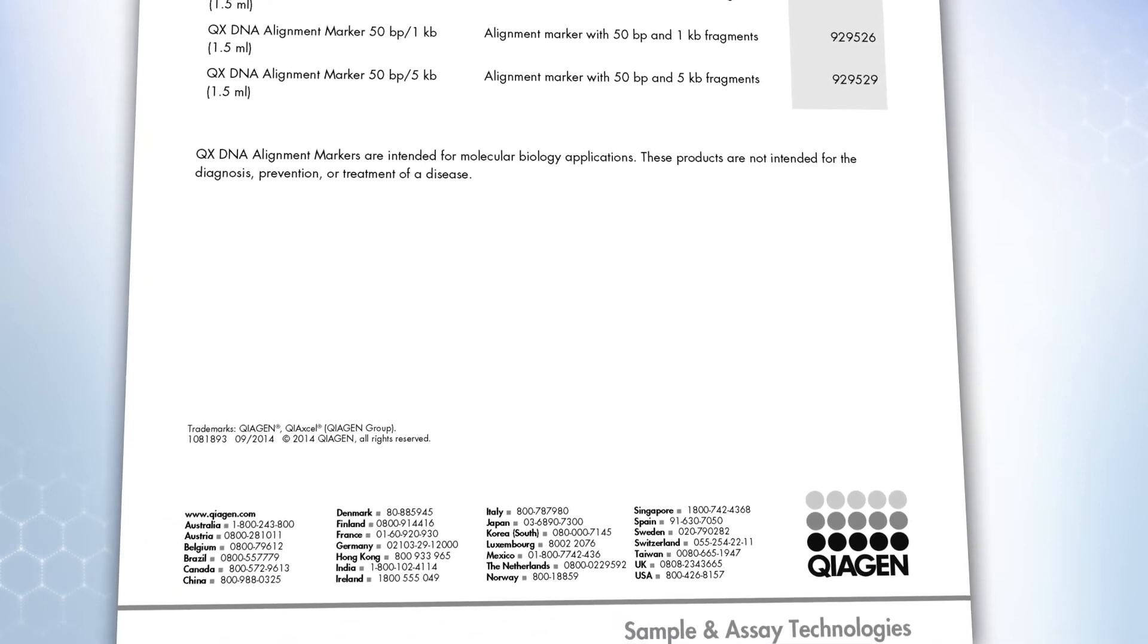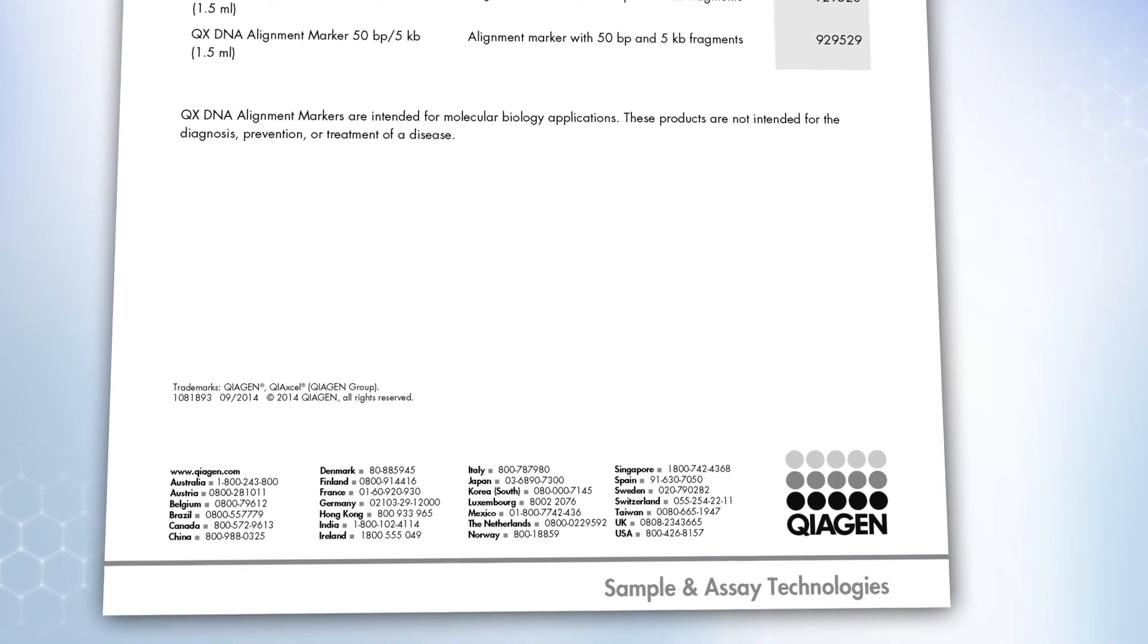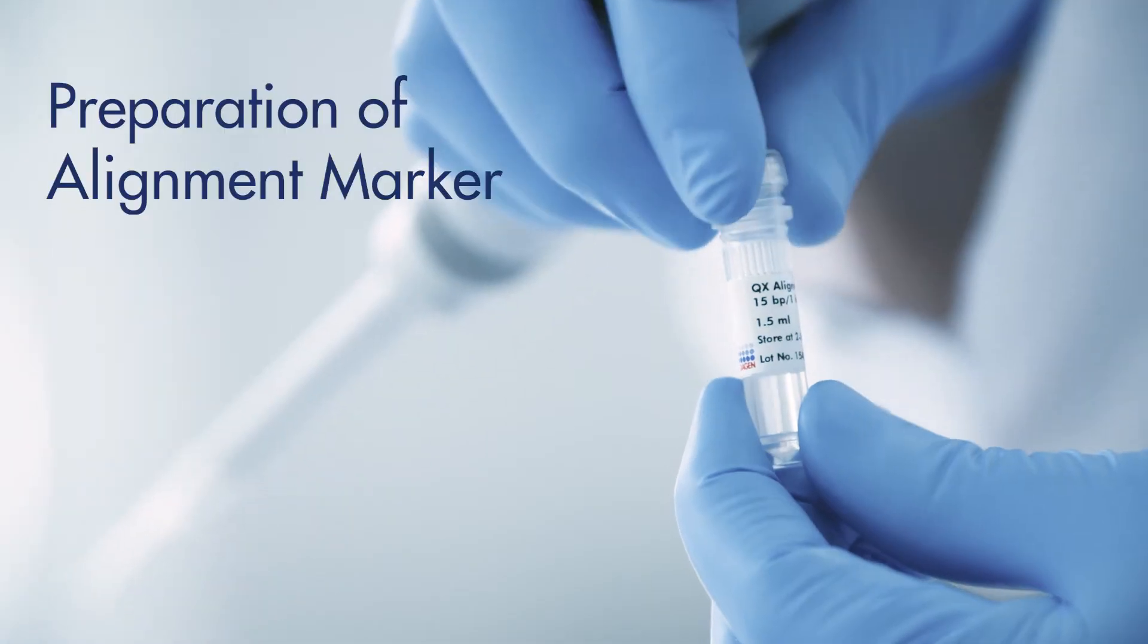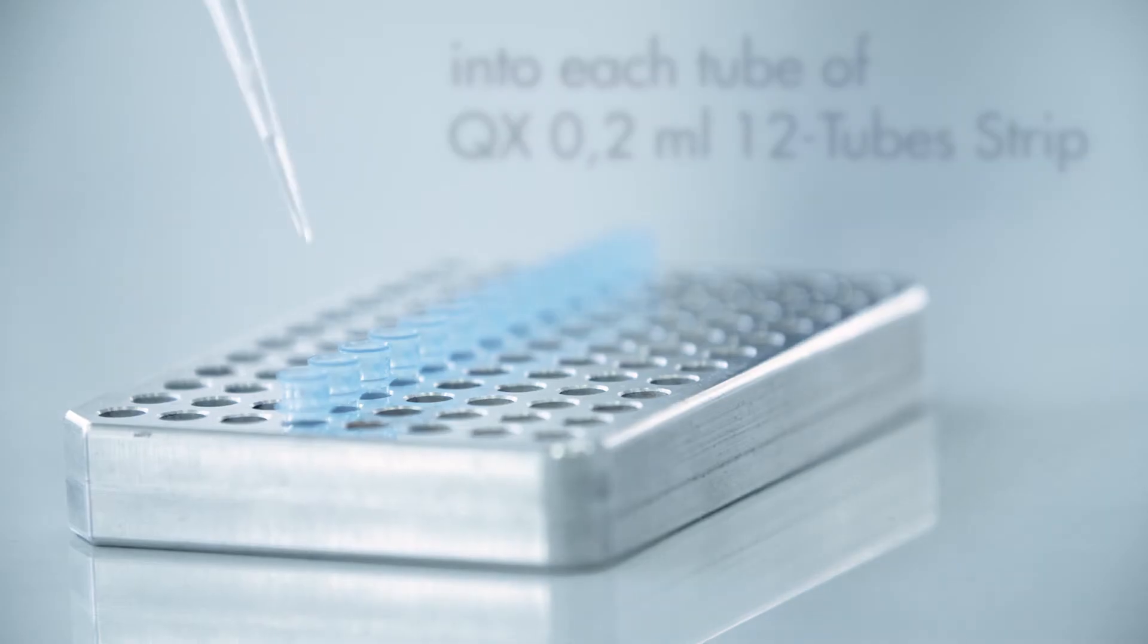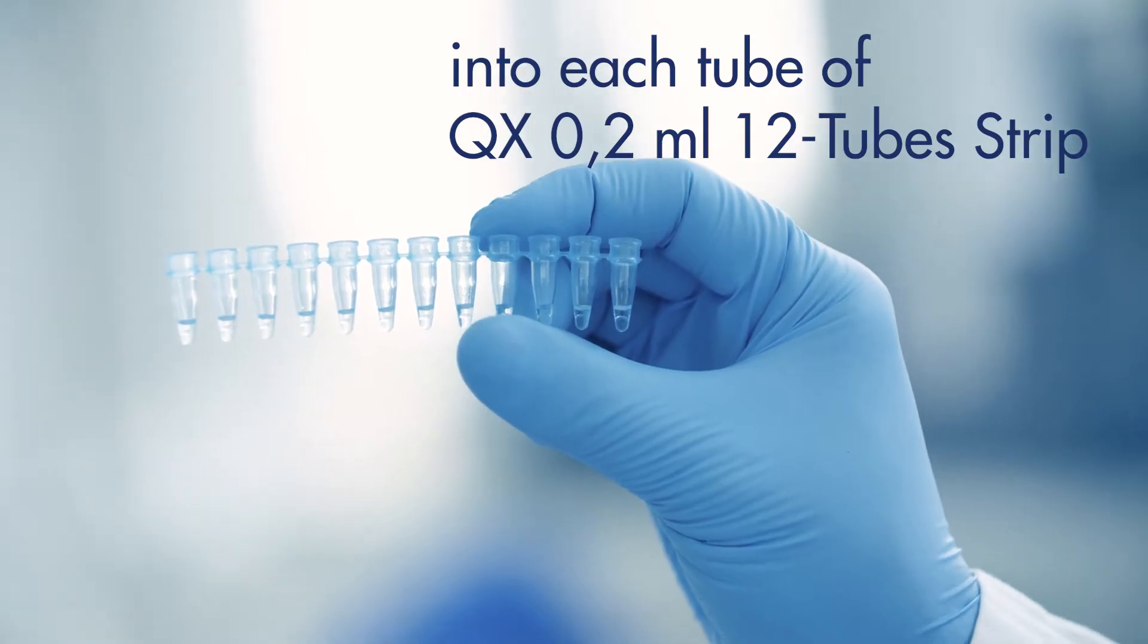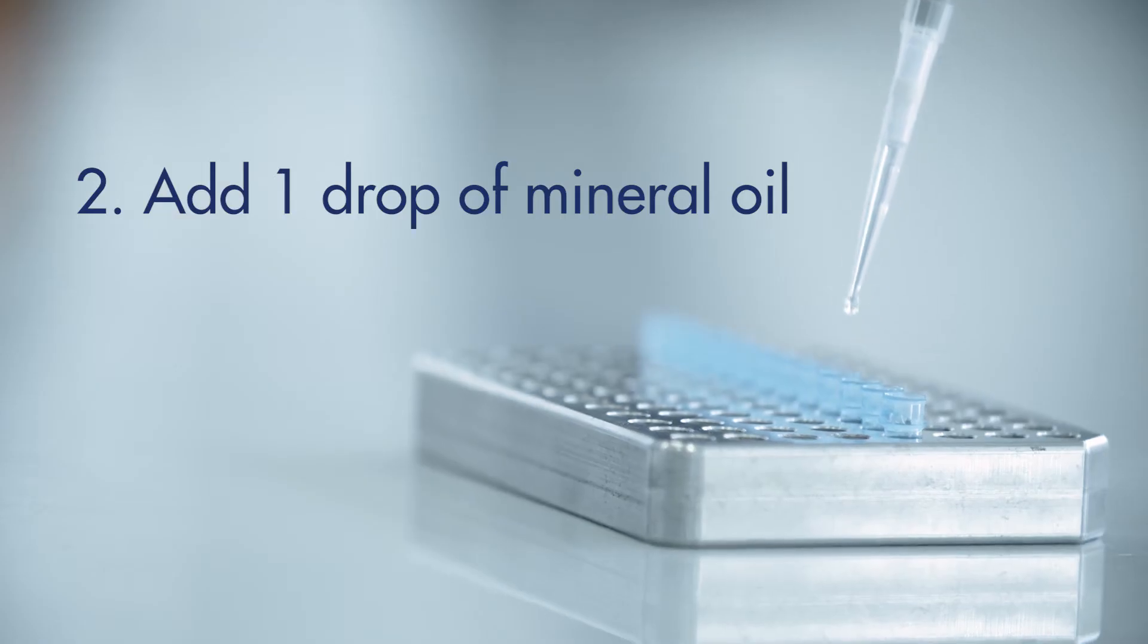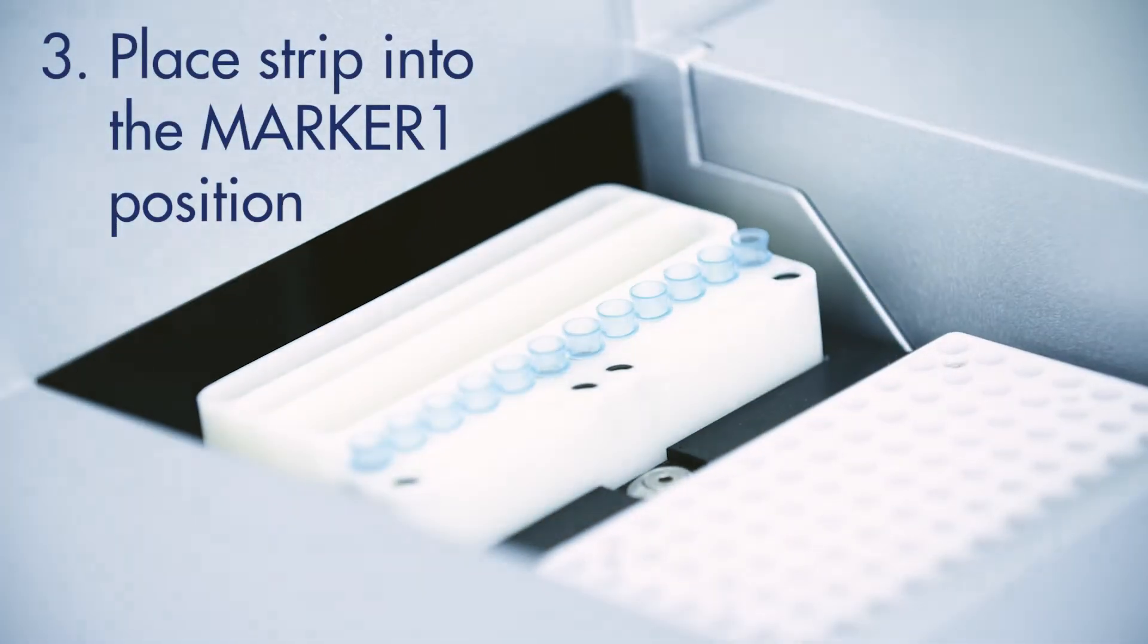During the analysis, all fragments in different channels are aligned with each other based on the fragments of the alignment marker. To prepare the alignment marker, load 15 microliters of alignment marker into each tube of a QX 0.2 milliliter 12-tube strip. Add one drop of mineral oil to each tube and place the strip into the marker 1 position of the buffer tray.